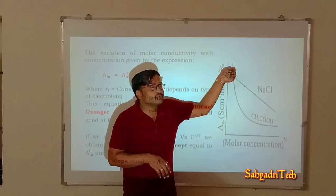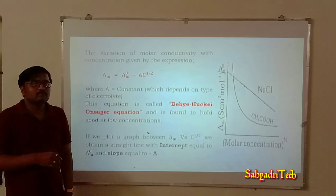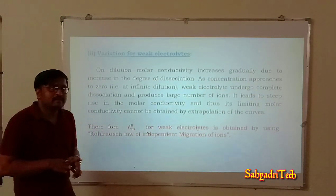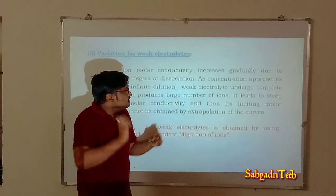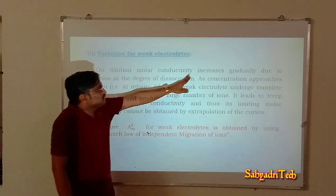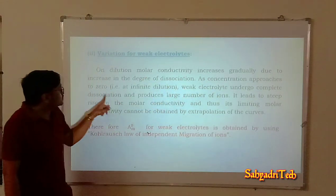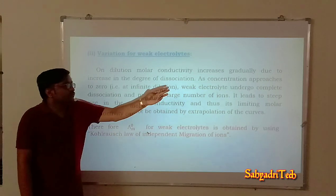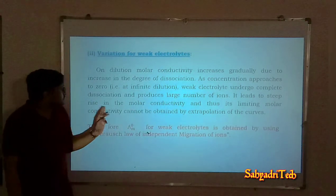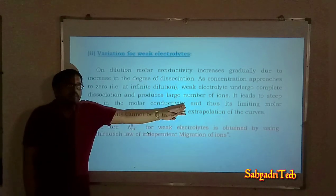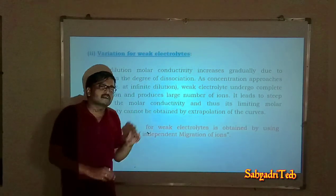Because of this steep rise, the curve does not intercept the y-axis, so you cannot get a limiting molar conductivity by extrapolation. On dilution, molar conductivity increases gradually due to an increase in the degree of dissociation, but as concentration approaches zero — at infinite dilution — the weak electrolyte undergoes complete dissociation, producing a large number of ions, leading to the steep rise. Thus limiting molar conductivity cannot be obtained by extrapolation of the curve — this is the drawback of the Debye–Hückel–Onsager expression.